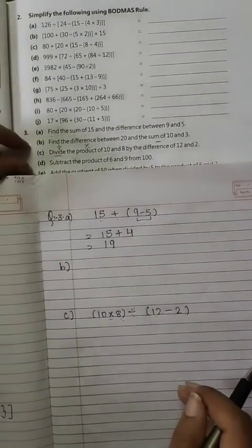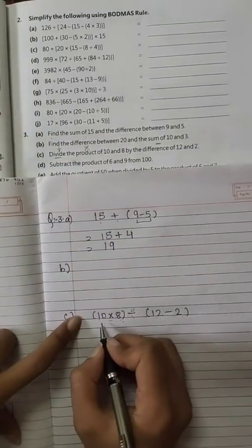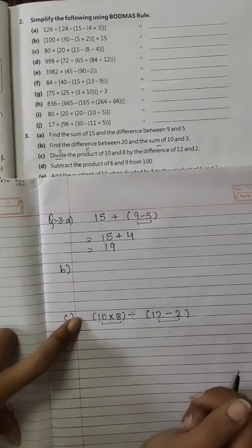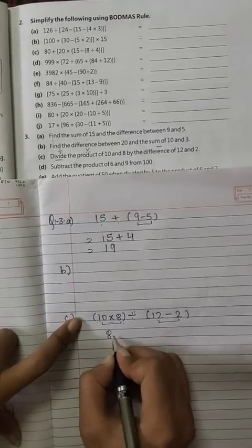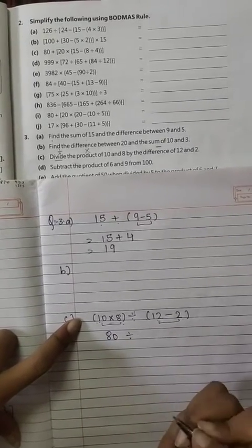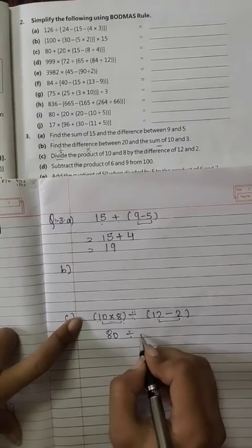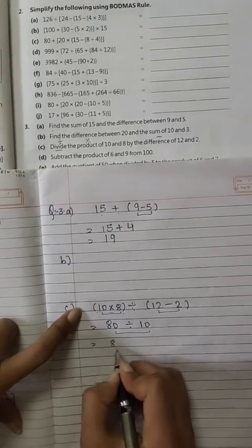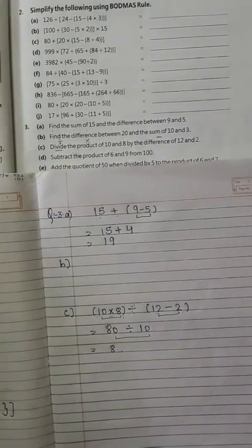Now we have to solve these. First brackets. Both are round brackets. Means both will be solved together. 10, 8's are 80. In between, divide sign stays as it is. 12 minus 2 is what? 10. Now 80 divided by 10 is what? 8. So this is your answer.